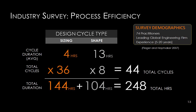A survey of leading design firms found that a sizing iteration — changing cross-sectional areas — takes about four hours of man hours, involving adjusting, running analysis, and parsing results. Shape iterations take longer, partly due to coordination with other disciplines like mechanical engineers and architects. Typically there are about 36 different sizing iterations and 8 shape iterations on a typical project, for about 44 total options and roughly 250 man-hours on an average job.